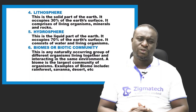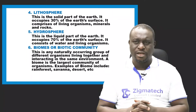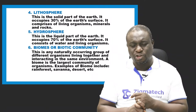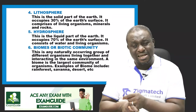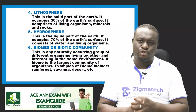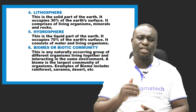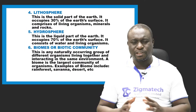The lithosphere is the solid part of the earth and occupies about 30% of the earth's surface. It comprises living organisms, rocks or soil, and minerals. The hydrosphere is the liquid part of the earth and occupies about 70% of the earth's surface. It consists of water and living organisms. These three parts make up the biosphere.